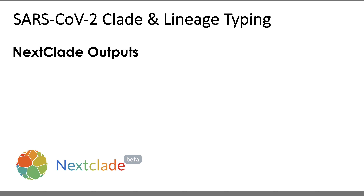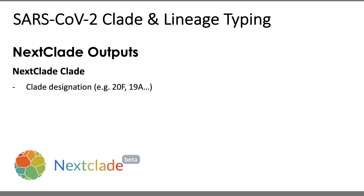Let's start by taking a closer look at the Nexclade outputs made available by these workflows. The first output is the Nexclade clade — the clade designation made by the Nexclade software. When one of these Titan workflows for genomic characterization is run, the consensus assembly is analyzed using Nexclade, which performs clade assignment on the basis of signature mutations. In this output field you'll see one of these Nexclade clades assigned to your sample, for example 20F or 19A, depending on the mutations identified in the consensus assembly.